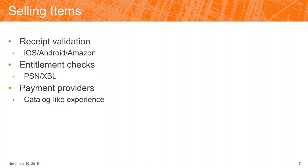Similar to receipt validation are entitlement checks, which are specific to PlayStation Network and Xbox Live. In those environments, when a player purchases something the item becomes part of their player profile. From our perspective, it's very similar to receipt validation — you give us the entitlement check, we make sure it's valid, make sure it's associated with an item in your catalog, and we add that item to the player inventory as an instance.